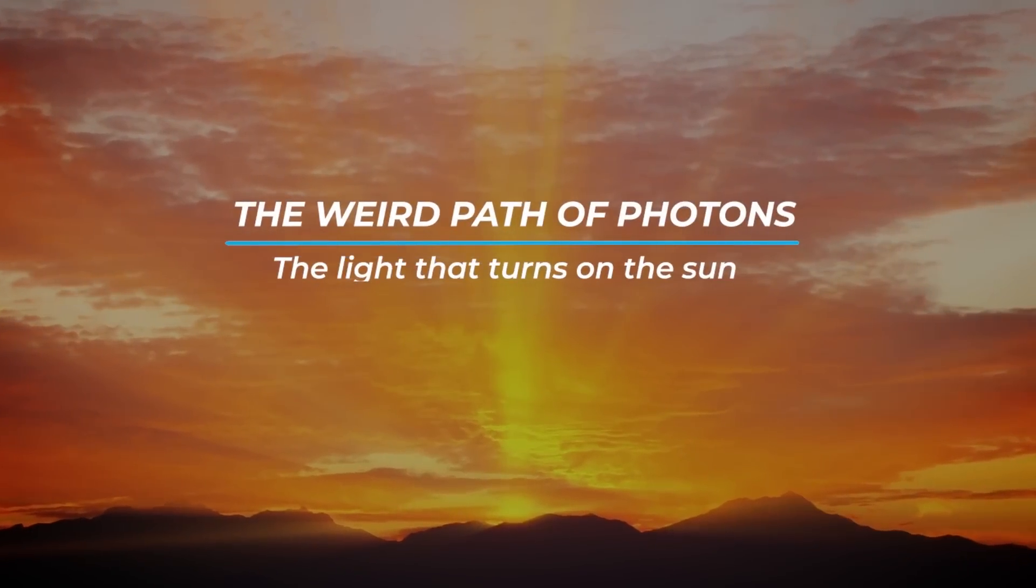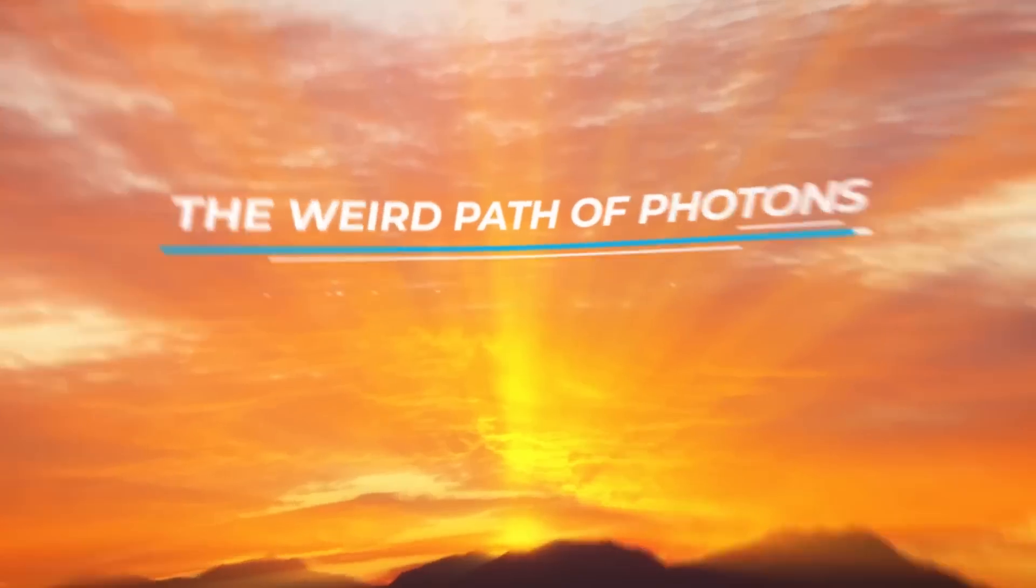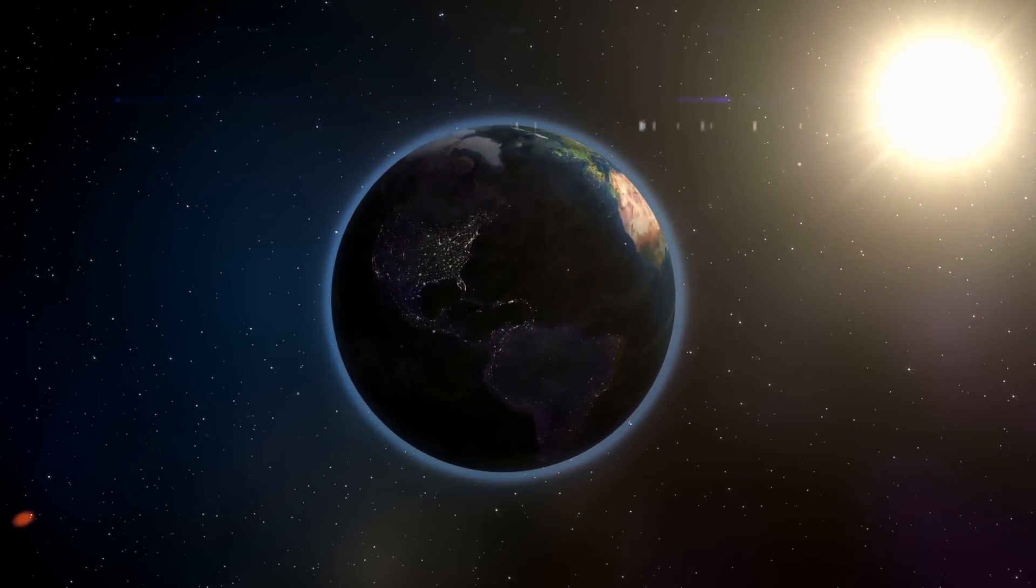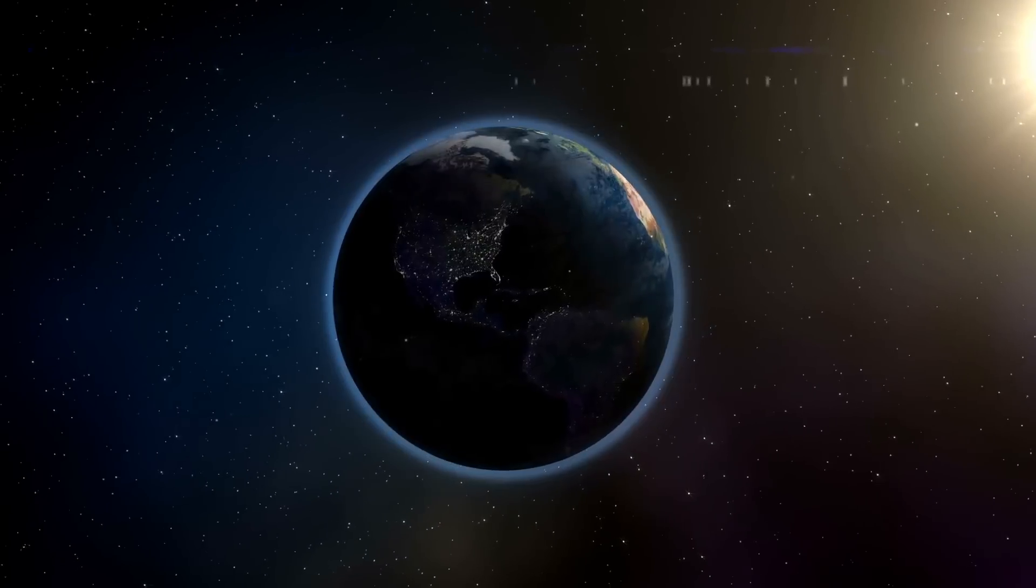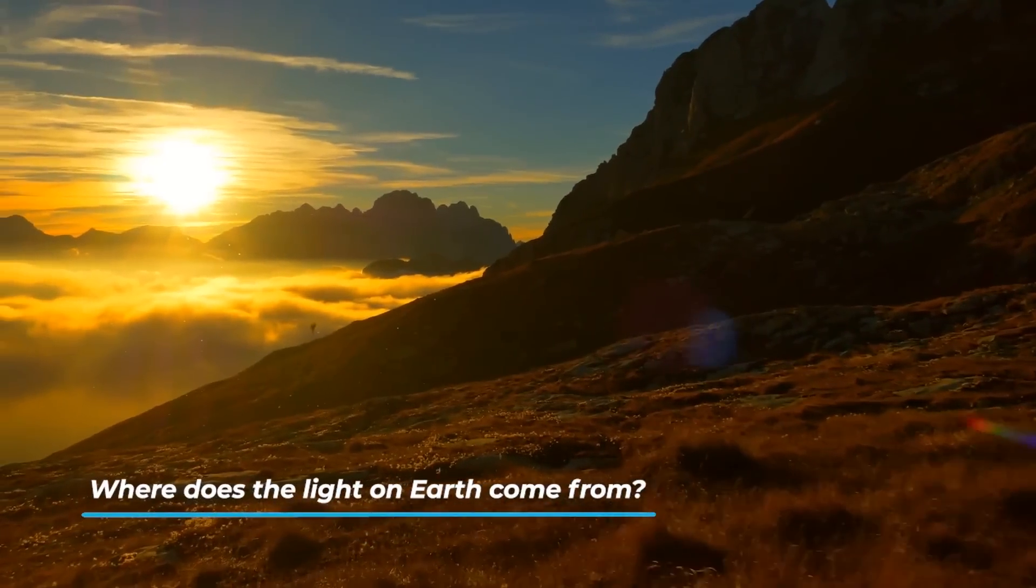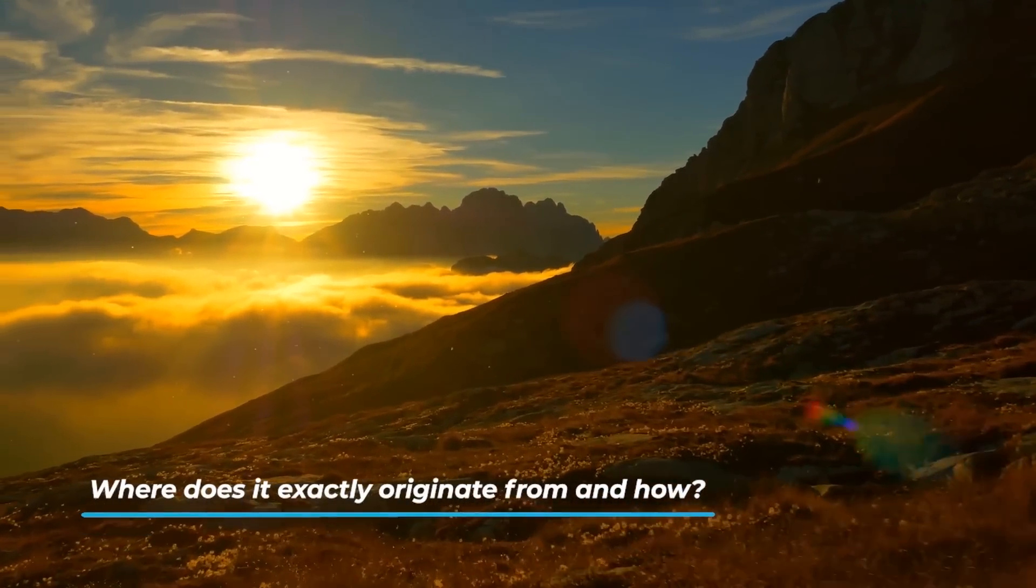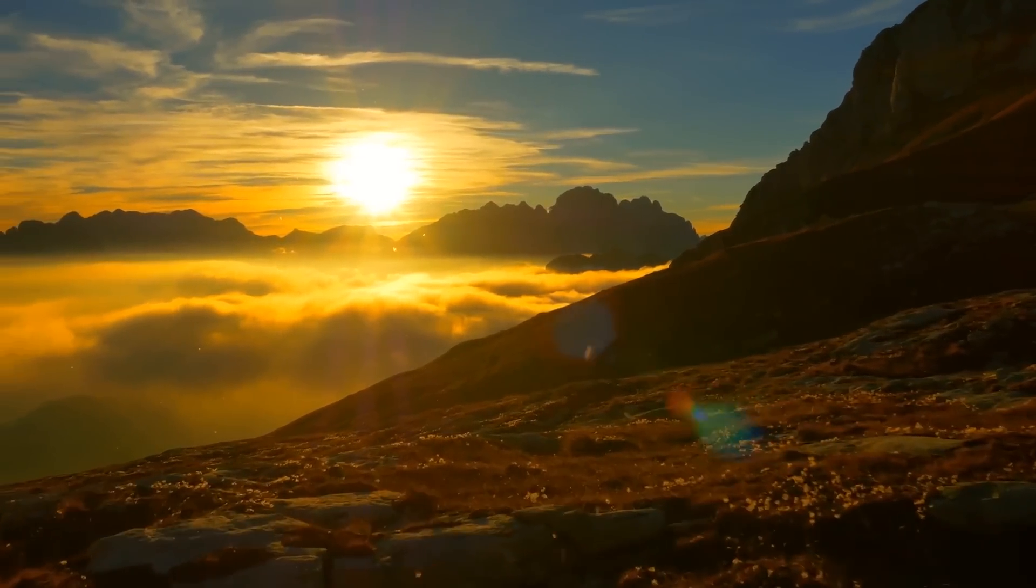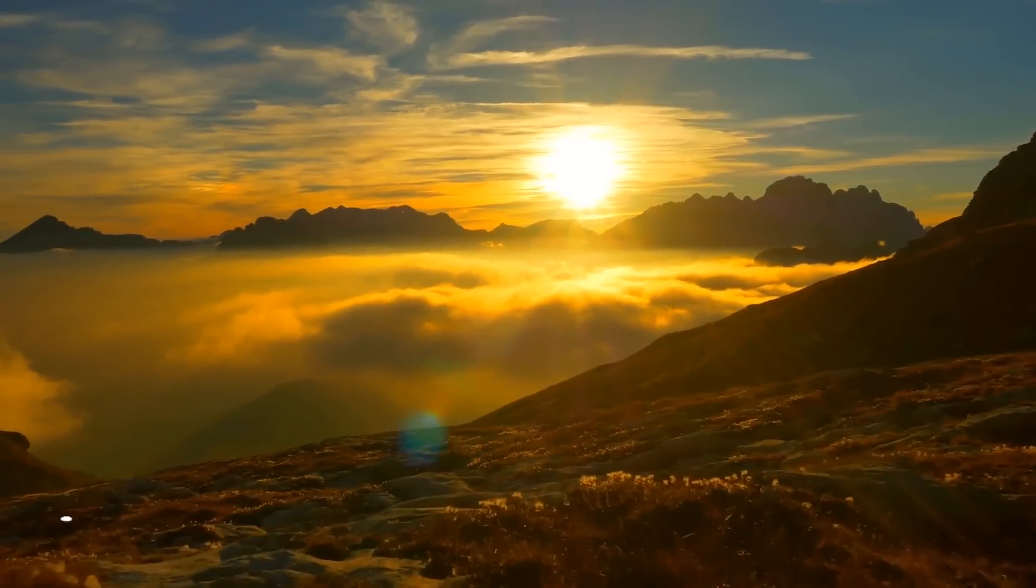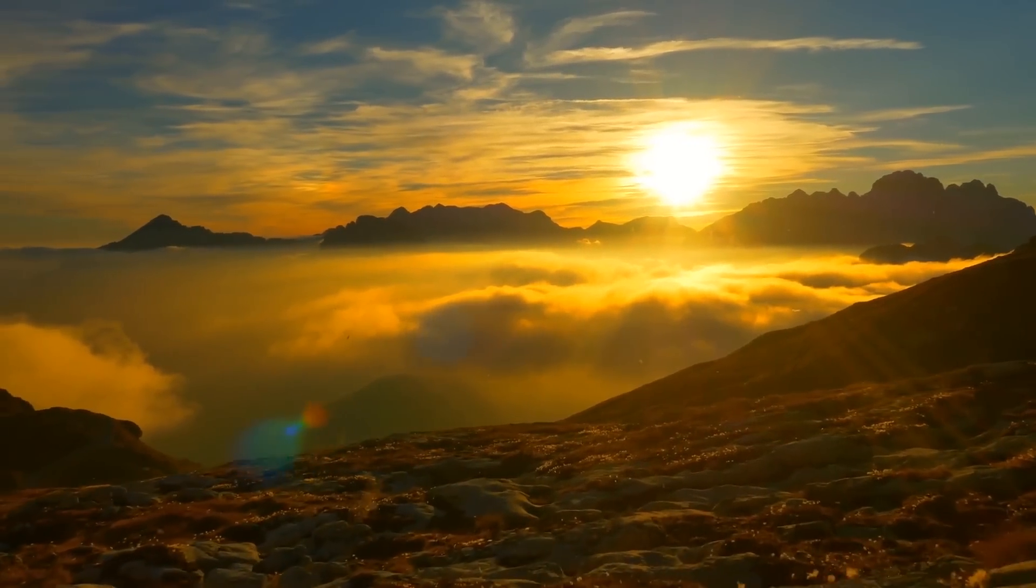The weird path of photons, the light that turns on the sun. Mankind and life in general can take place on Earth only because there is light. Otherwise, everything would be dark and cold. Where does the light on Earth come from? Where does it exactly originate from and how? Why is electromagnetic radiation so important for life on Earth? Stick with us and we're going to answer in this video.